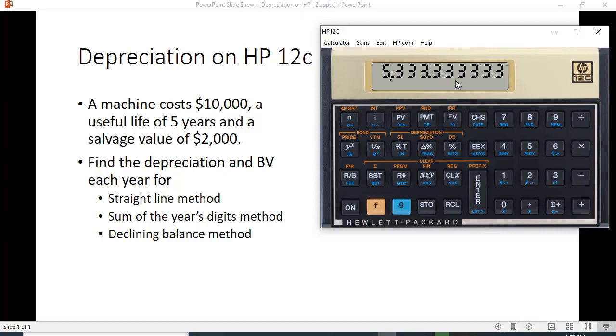If you do it for year two, sum of the years digits, you'll notice this is a smaller amount than we had before because it's an accelerated depreciation method. You depreciate more in the early years and less in the later years. You can see the book value by hitting the swap XY key.